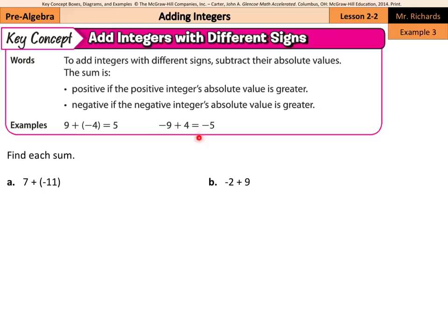Looking at the examples in the box: 9 plus negative 4. The absolute value of 9 is 9, and the absolute value of negative 4 is 4. The 9 is bigger, so the sum is positive — we subtract to get 5, and our answer remains positive.